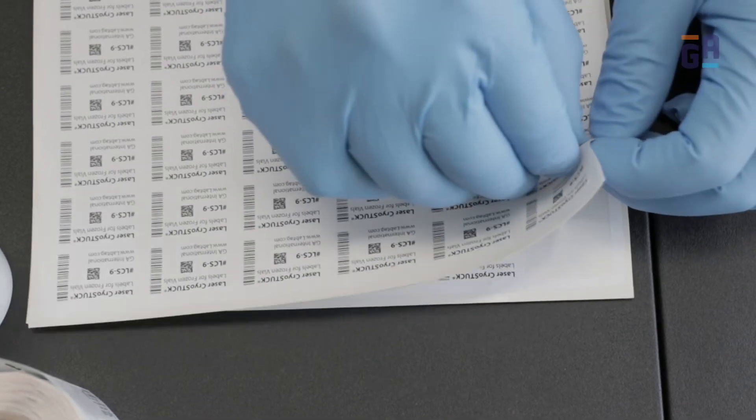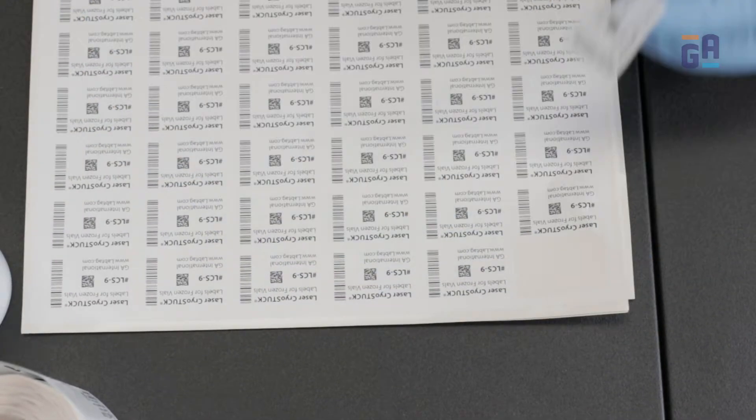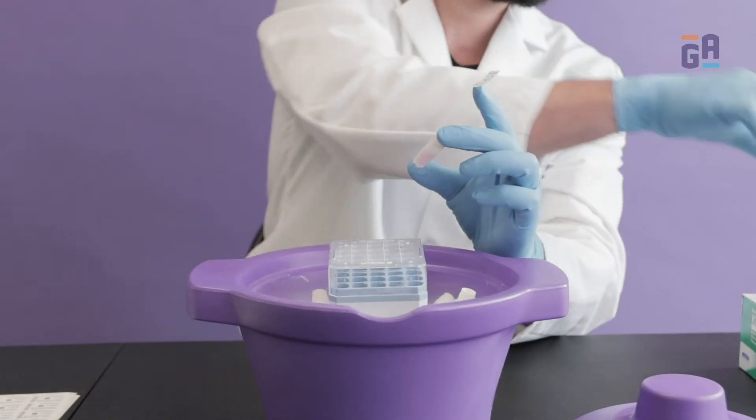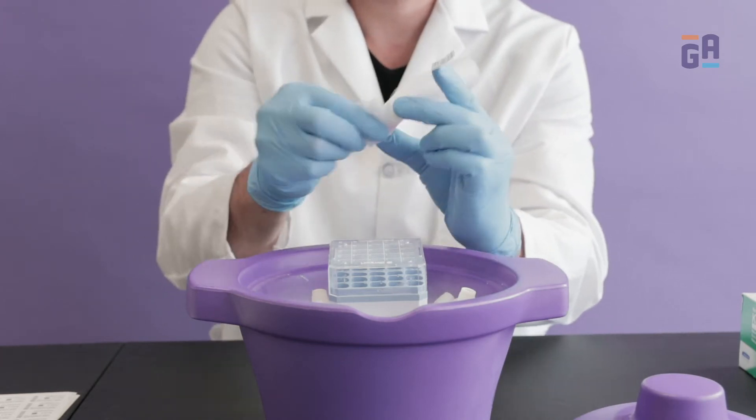Peel label and affix to the tip of your glove. Give the tube a quick wipe to remove any excess frost.